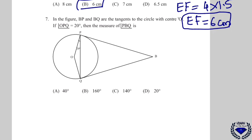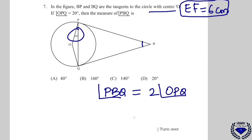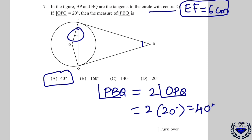Question number 7: BP and BQ are tangents to a circle with centre O, and the given angle is 20°. By the theorem, angle PBQ is twice the inscribed angle, so 2 × 20 = 40°. The correct answer is option A, which is 40°. This is an example question from your textbook.